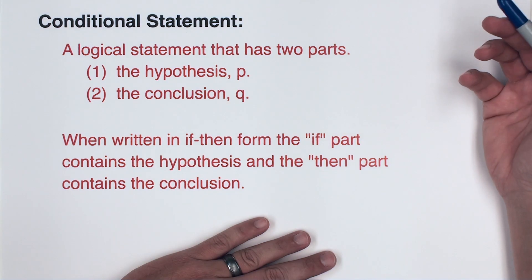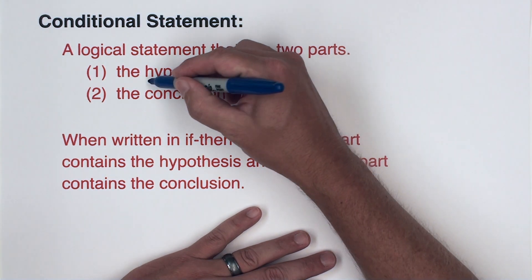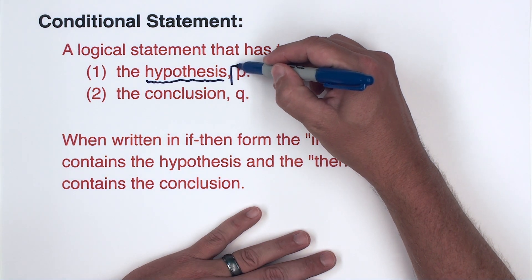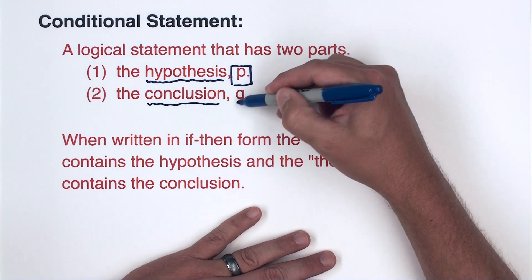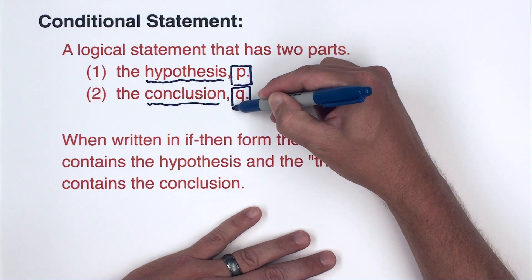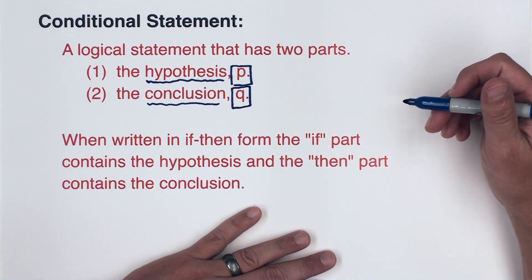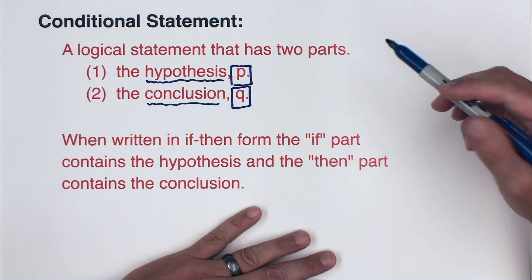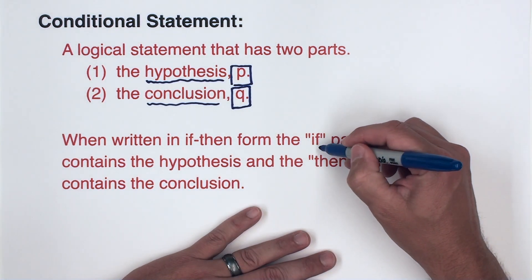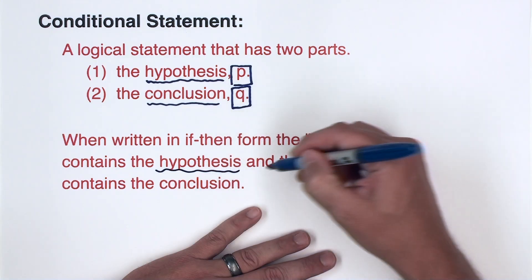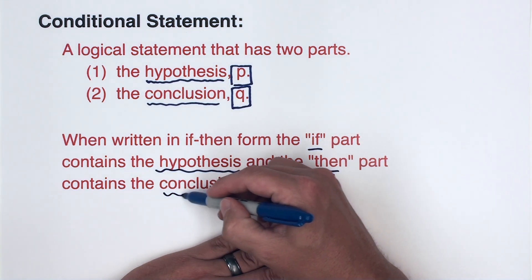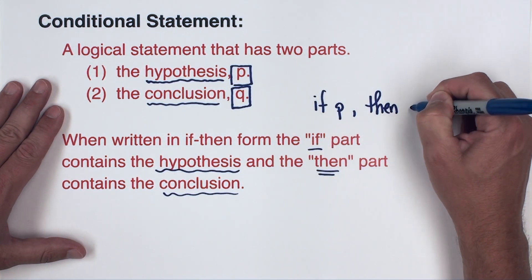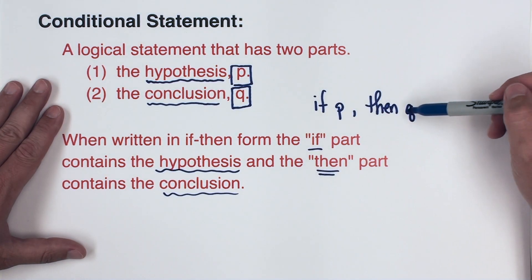A conditional statement is a logical statement that has two parts. It's going to have a hypothesis — for shorthand we'll call the hypothesis P — and it's also going to have a conclusion, which we'll call Q. When written in if-then form, the if part contains the hypothesis and the then part contains the conclusion. So in shorthand we write this as: if P then Q.